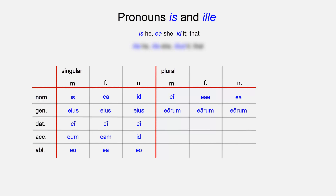The dative is the same through all three plural cases: eis, eis, eis. The accusative of the masculine plural is eos, feminine plural eos, and neuter ea. The ablative for all three cases is also the same in the plural: eis, eis, eis.